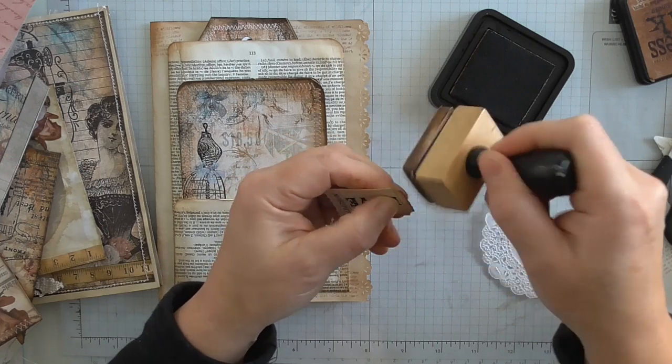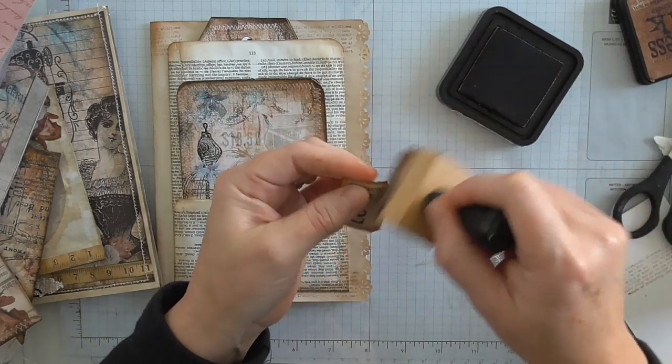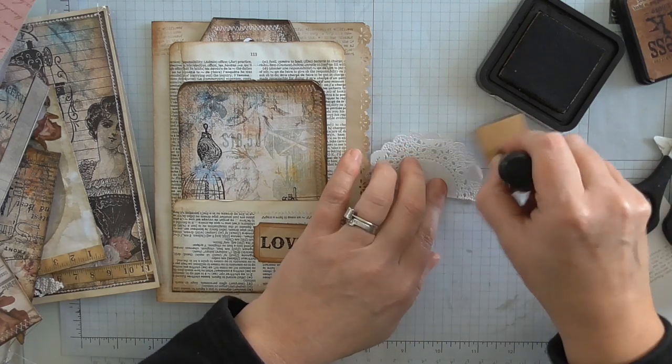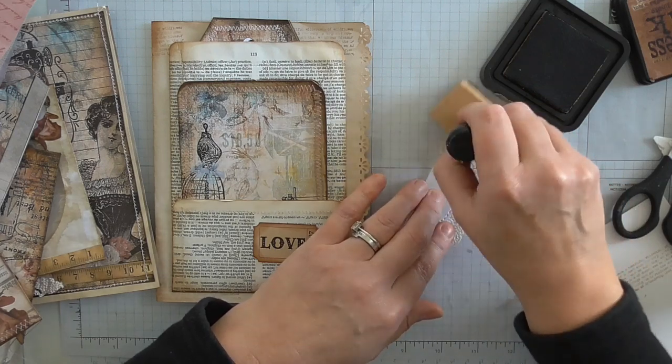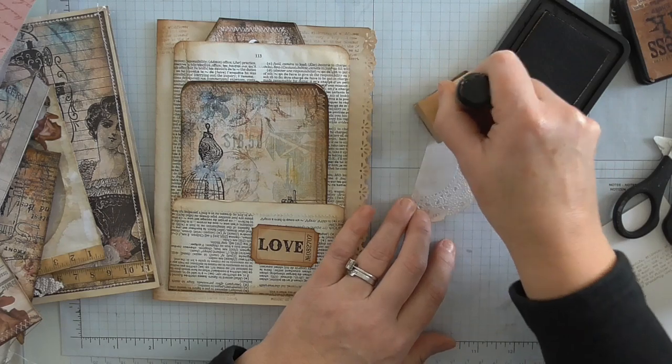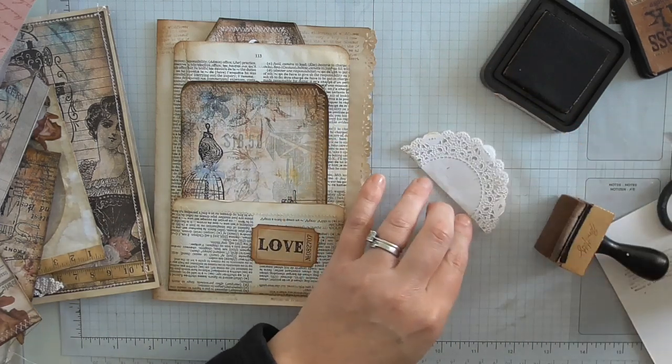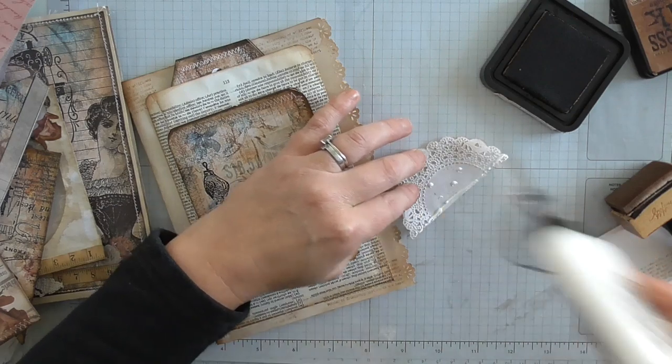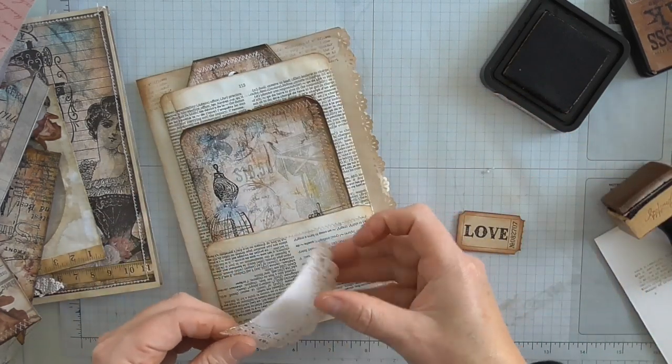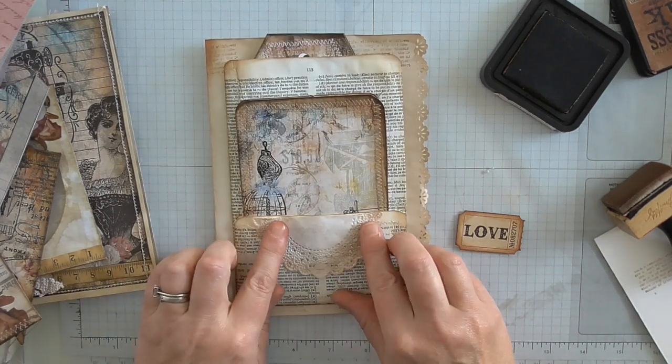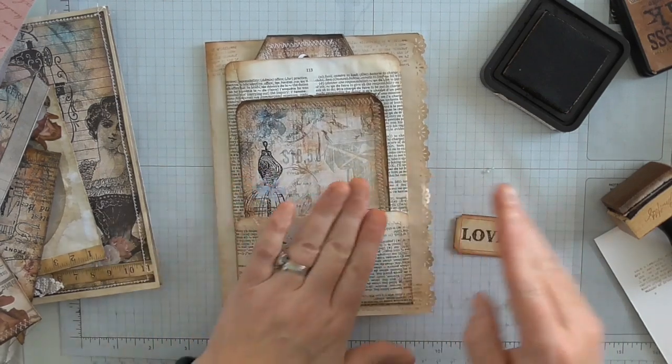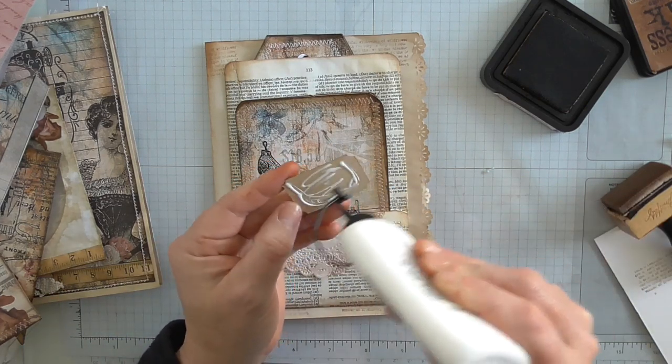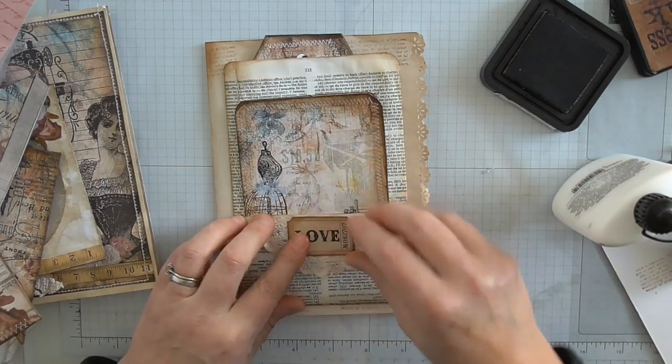I'm going to ink my ticket up. I'm going to use the same distress ink throughout, I'm using Vintage Photo. Let me just quickly take some of the brightness off of that. I don't want to have it completely dark, I quite like some of the white, I'm just taking some of the starkness off. And then I'm just going to put a few dots of glue there. And then I'll stick that doily on there like so.